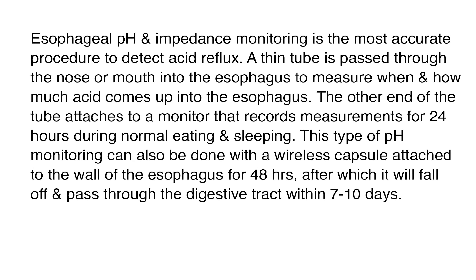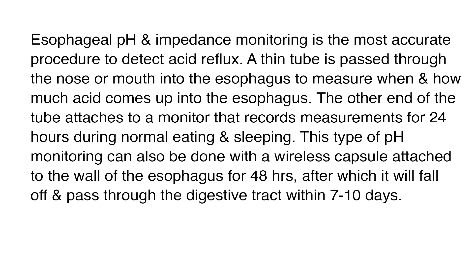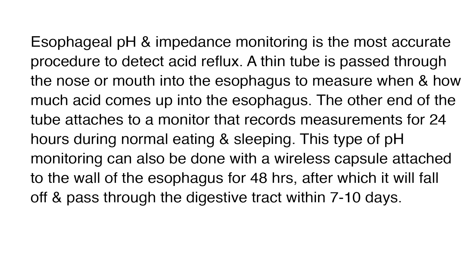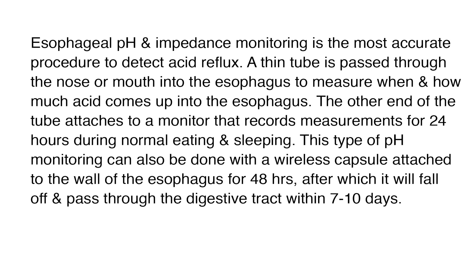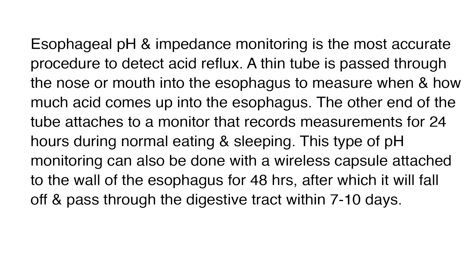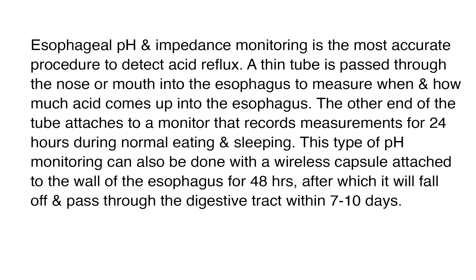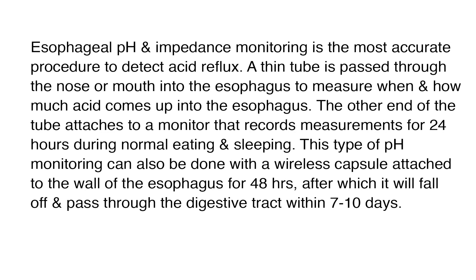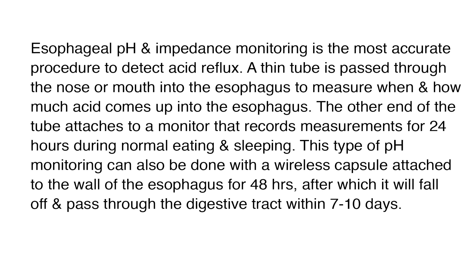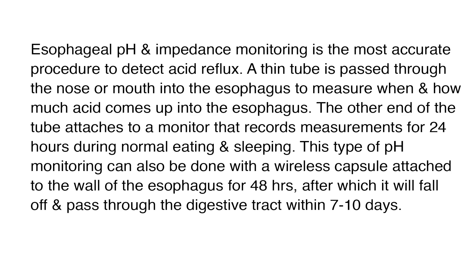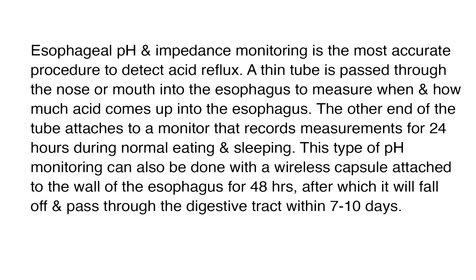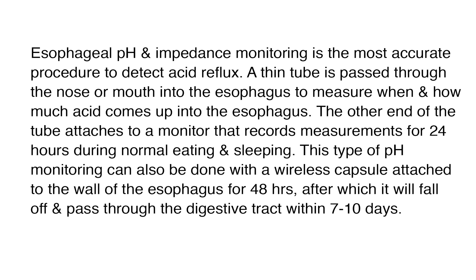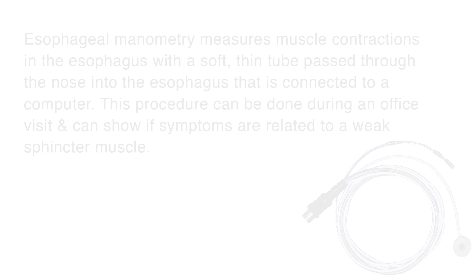Esophageal pH and impedance monitoring is the most accurate procedure to detect acid reflux. A thin tube is passed through the nose or mouth into the esophagus to measure when and how much acid comes up into the esophagus. The other end attaches to a monitor that records measurements for 24 hours during normal eating and sleeping. This can also be done with a wireless capsule attached to the wall of the esophagus for 48 hours, after which it will fall off and pass through the digestive tract within 7 to 10 days.